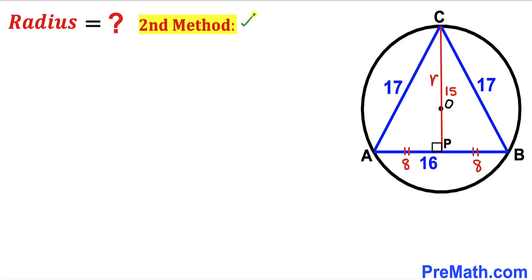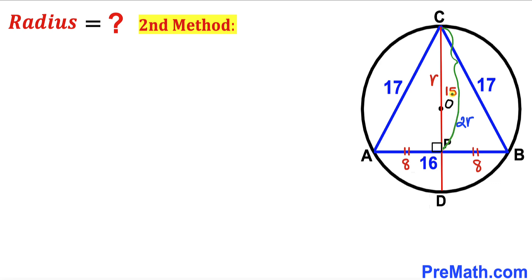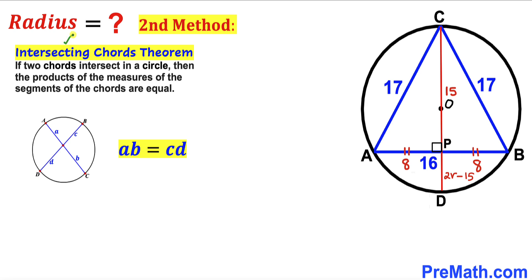Now let's look at the second method. I extend CP all the way to point D, so that CD is the diameter of the circle, meaning CD = 2r. Since CP is 15, the remaining segment PD equals 2r − 15.